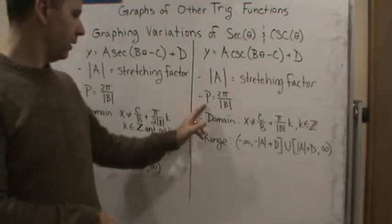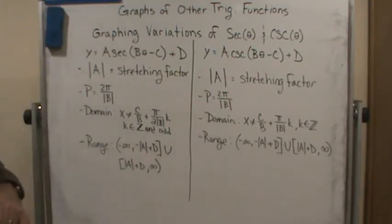The period is the same, 2π divided by the absolute value of b.